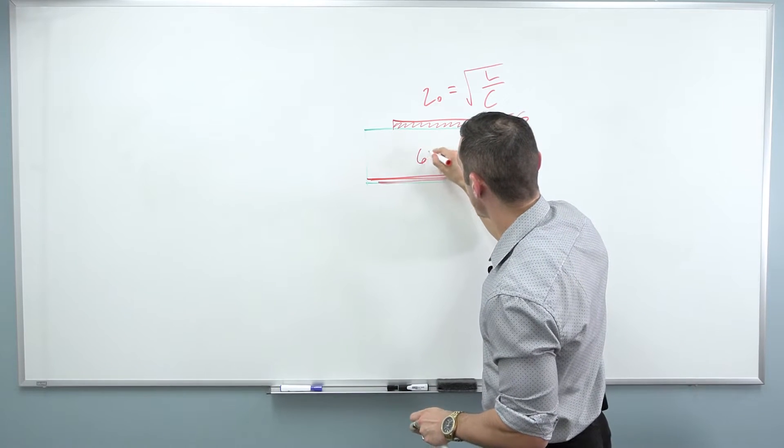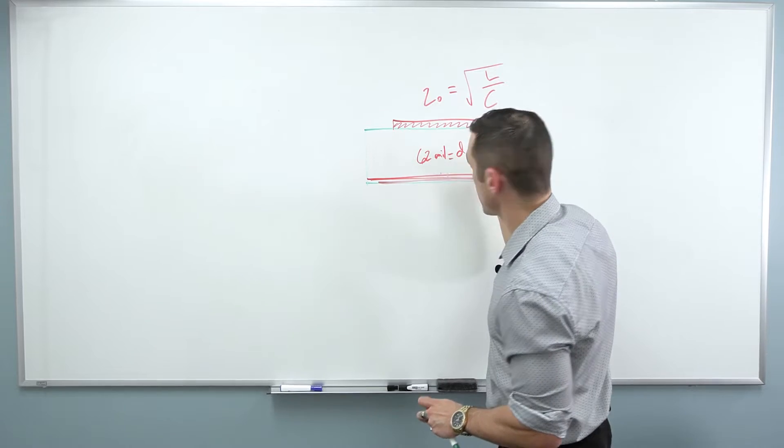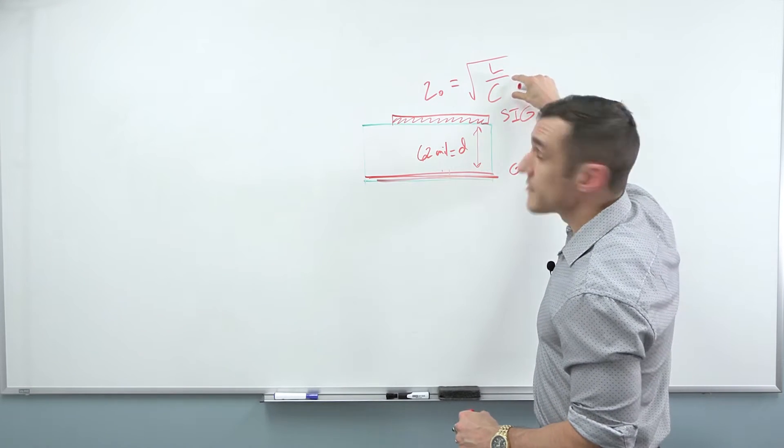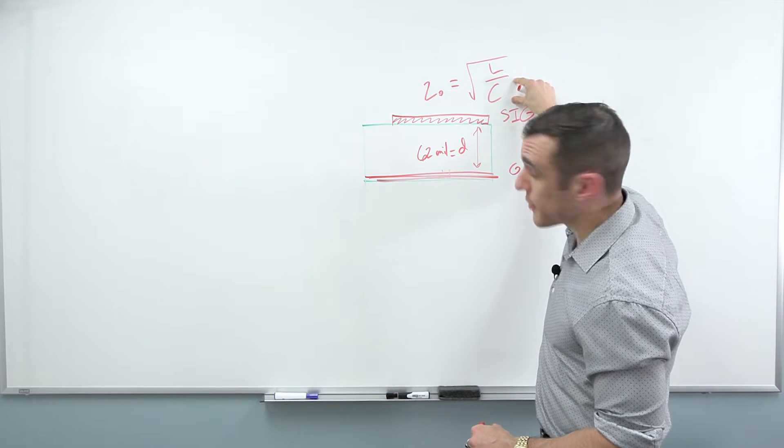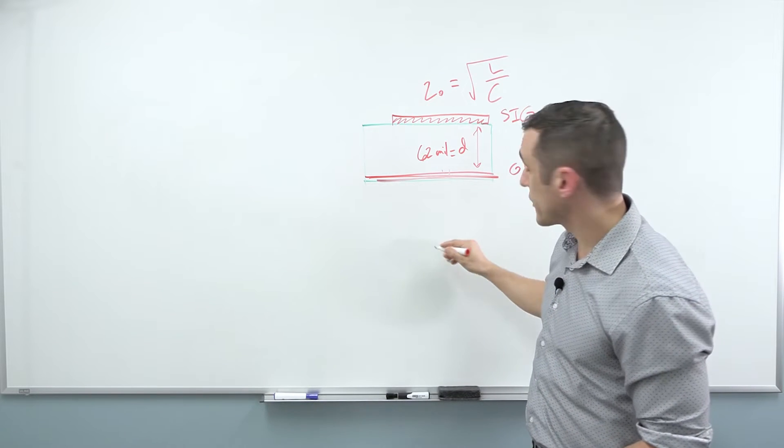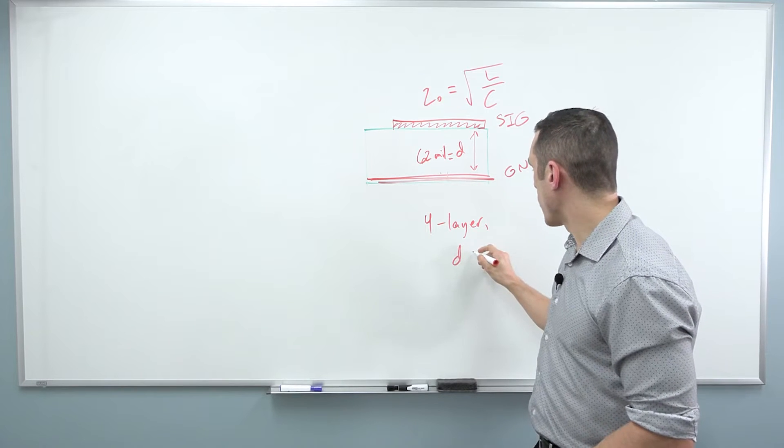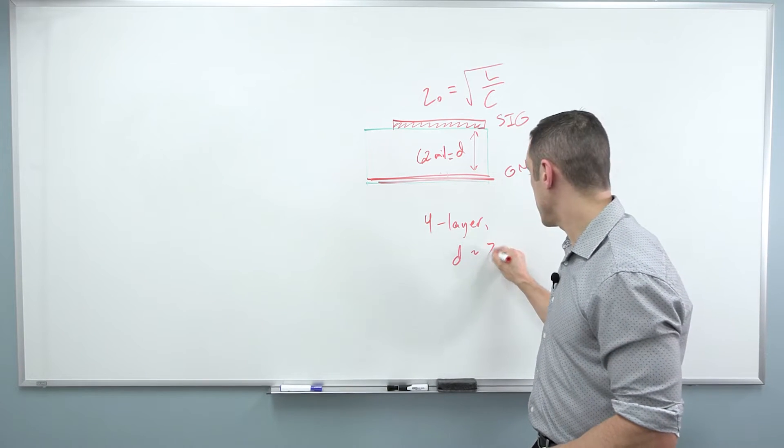Like when D is, let's say, 62 mils. This is your standard PCB thickness. We have a very small value for C compared to the case of a four-layer board, where if we have a four-layer board, D might be something more along the lines of like seven mils.